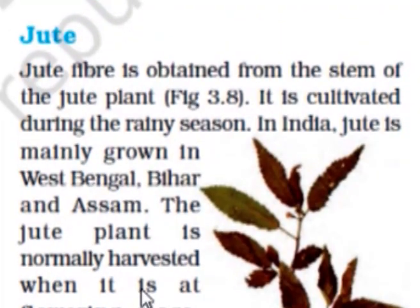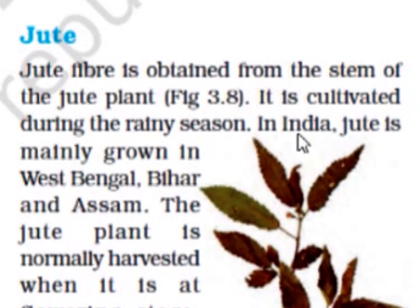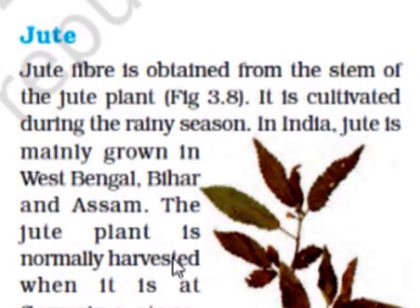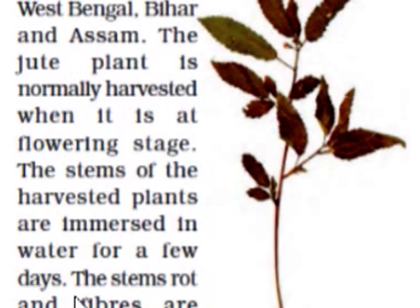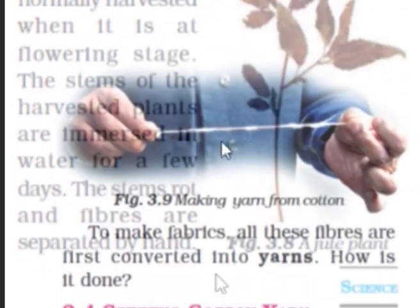Jute: Jute fiber is obtained from the stem of the jute plant. It is cultivated during the rainy season. In India, jute is mainly grown in West Bengal, Bihar, and Assam. The jute plant is normally harvested when it is at the flowering stage. The stems of the harvested plants are immersed in water for a few days, then the stems rot and fibers are separated by hand.